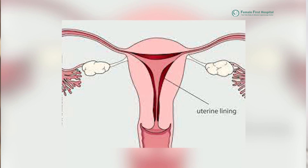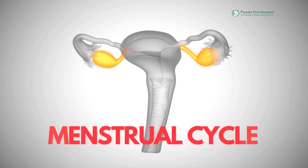If there is no fertilization, hormone levels drop, there will be shedding of the uterine lining, and a new menstrual cycle will begin. It is essential to understand that variation in cycle length and hormonal fluctuation are normal, and can be influenced by factors such as age, diet, stress, and underlying health issues.